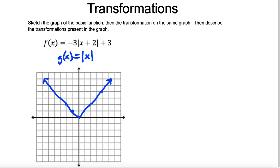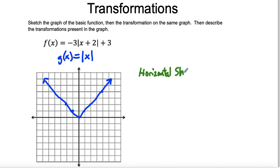Now you're going to graph the transformation. But let's find out what's happening. We've got a number of things going on here. The first thing you want to do is identify what's happening inside the absolute value. A plus two inside actually means the opposite direction — anything inside absolute value, parentheses, or a square root goes the opposite direction. So this is going to be a horizontal shift left of two.